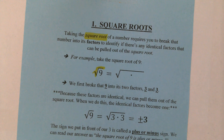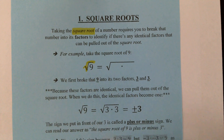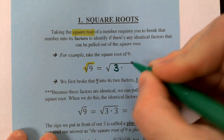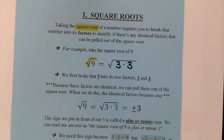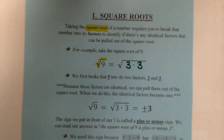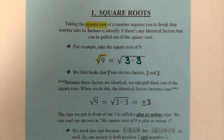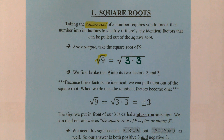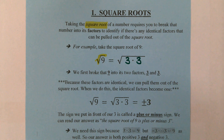Which two numbers multiply to give us 9? 3 and 3. Go ahead and write those two 3s in there. Most of these notes are filled out already, but there are some blanks. I like these printed notes because we can actively listen as opposed to frantically copying down what we see. We can use this time to process, to think, to re-read certain things.